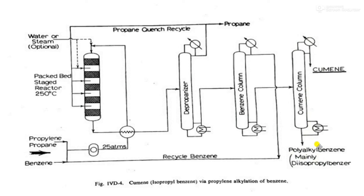The major engineering problems for this process are: first, the reactor design must account for the staged packed tower with propane quenching; second, for removal of additional heat, a water injector should be used as an alternative method; third, polyalkylbenzene formation must be minimized by using high feed ratios of benzene to propylene and employing the propane dilution method.